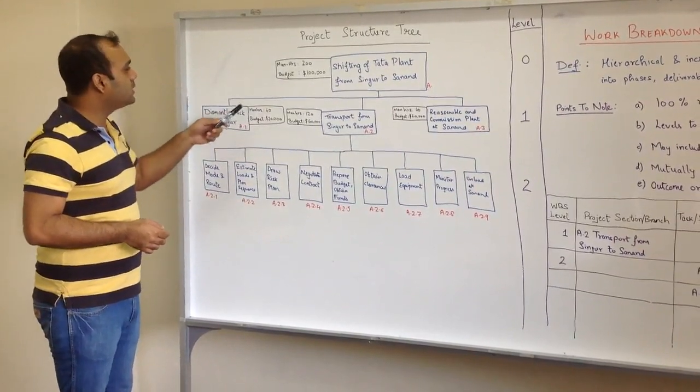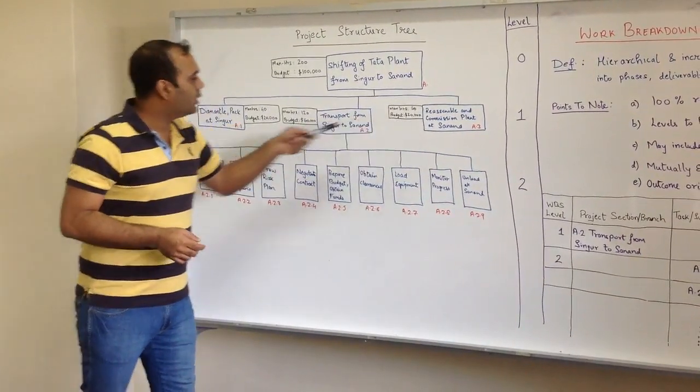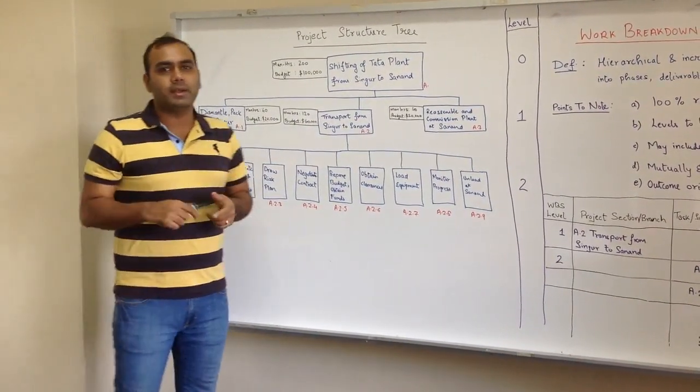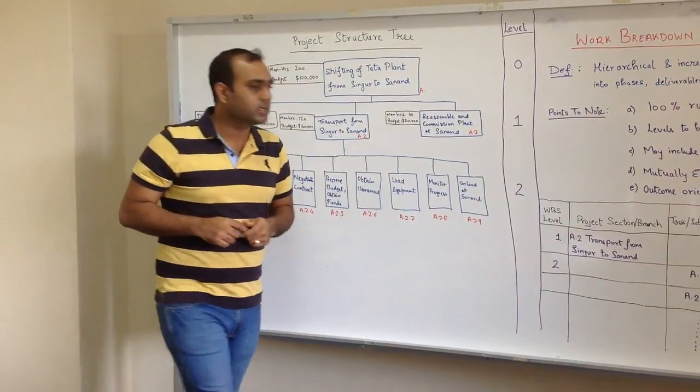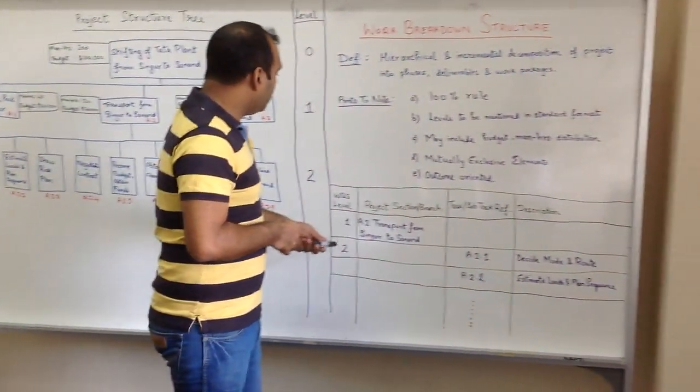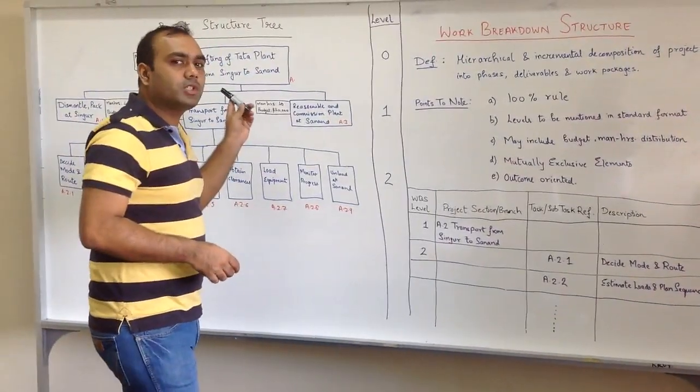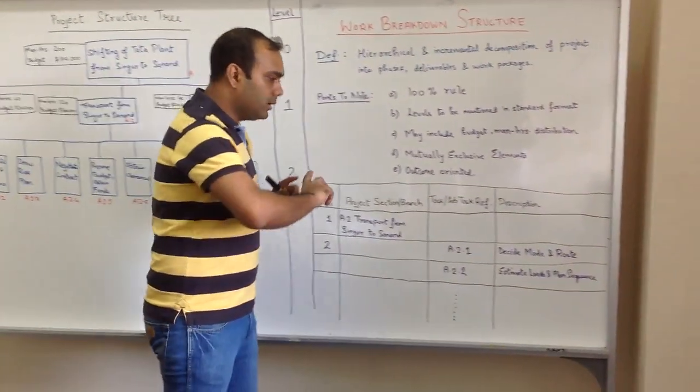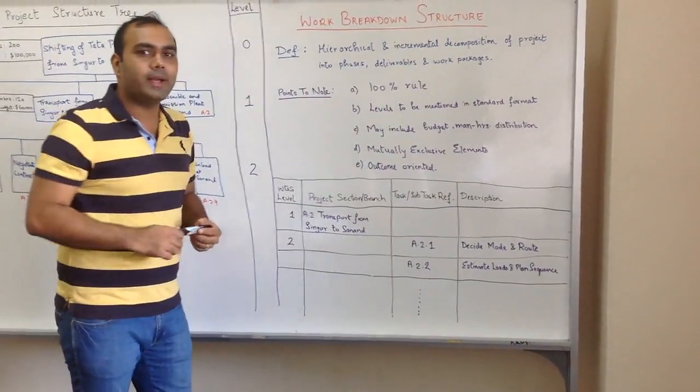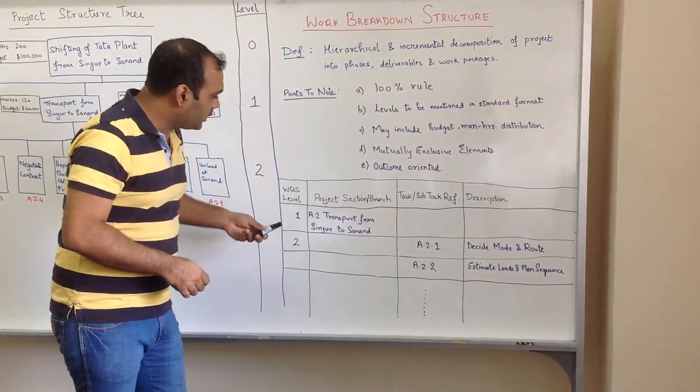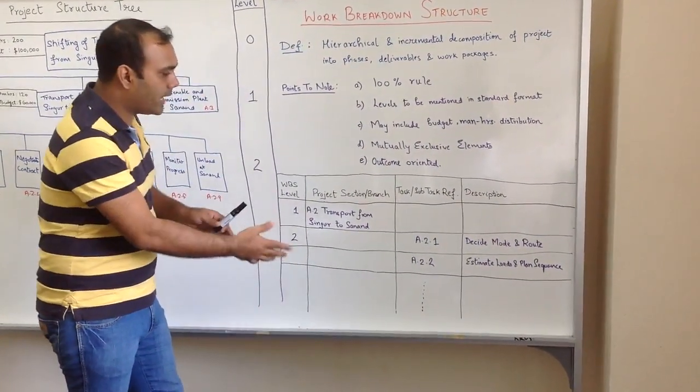This is further broken down for each of them, which gives a better outlook and helps in planning the schedule much better. Coming down here, the project structure tree can be made in a tabular format as well, and this would be a standard way. I've shown it in a very small sequence here.